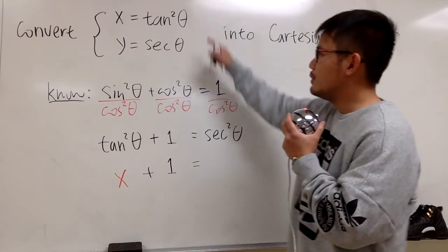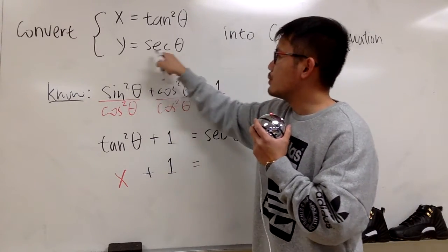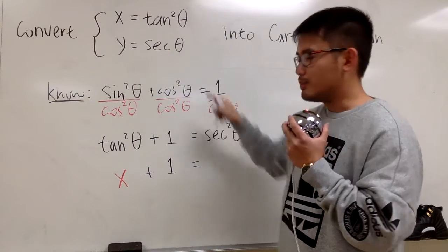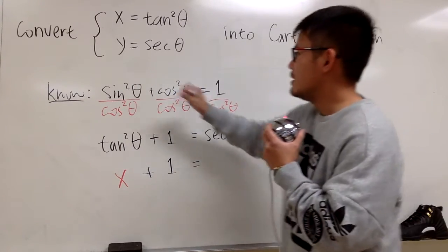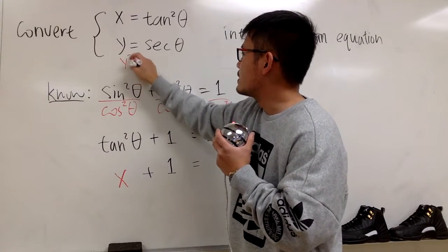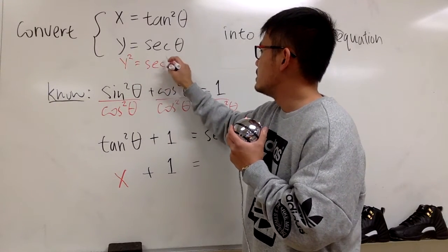But then, if you look at the information that we have, we know y is equal to secant theta. I want to produce secant squared theta. So what can we do? Well, very easy, we square both sides. You see y squared, that will give us secant squared theta.